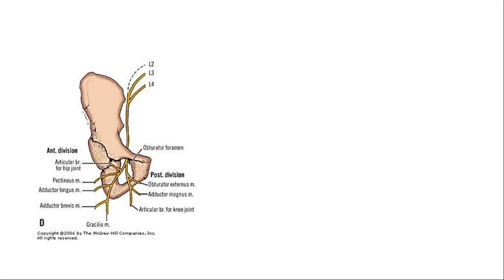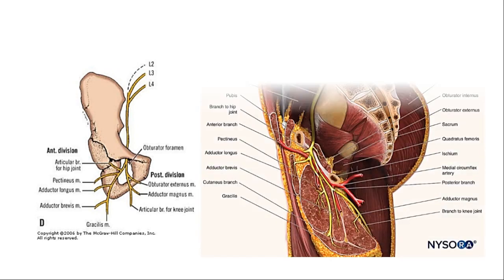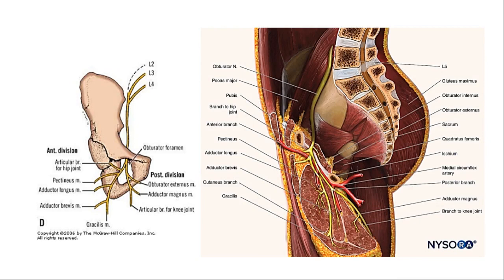The obturator nerve is derived from L2, L3, and L4 nerve roots. It is part of the lumbar plexus and descends on the medial side of the psoas muscle in the pelvis. Through the obturator foramen it exits the pelvis, after which it makes two divisions — anterior and posterior. Before the division, the obturator nerve gives articular branches to the hip joint.